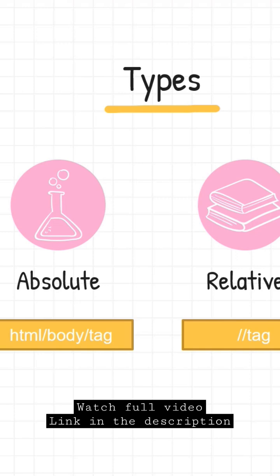For example, if I want to find a simple text box, I have to go from the HTML tag, then follow the body, then from the body go to the div, and from the div go to the button or the input tag. But with relative XPath, I can locate the element directly.